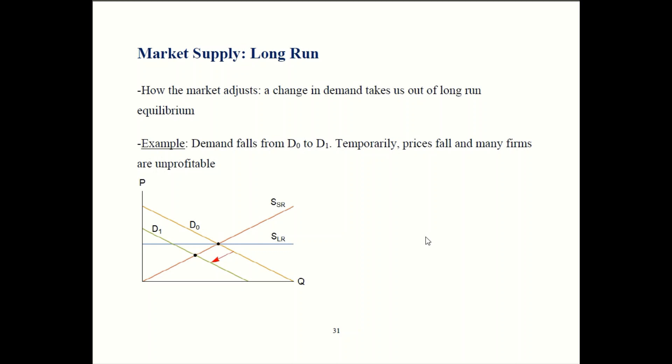So now we'll see how the market can adjust if there are changes like a shift in demand. So let's say demand starts out here, this old demand curve D0. Then demand is going to fall, it's going to drop back to D1. Here's how the market is going to react. So once demand falls, you go to the short run supply and see that price will fall and that's going to mean that temporarily several firms will be running losses. A lot of firms are going to be unprofitable.